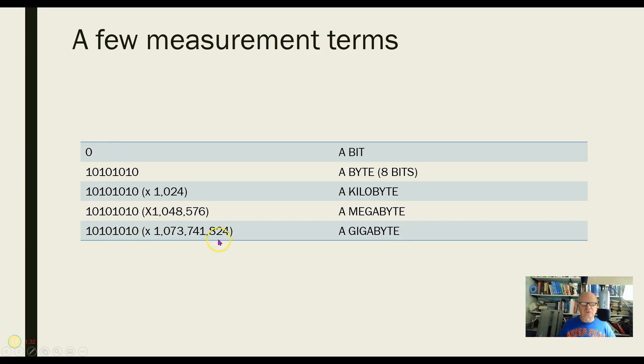Here are a few measurement terms. There are, of course, many more that we go into. We don't do that so much in this course, because I know that you do in some other courses, perhaps the 120 course and some of those. A bit is a zero or a one, a byte, eight of those. A kilobyte, 1,024 of these. A megabyte is 1,048,576 of these, and a gigabyte, a little over a billion of these.